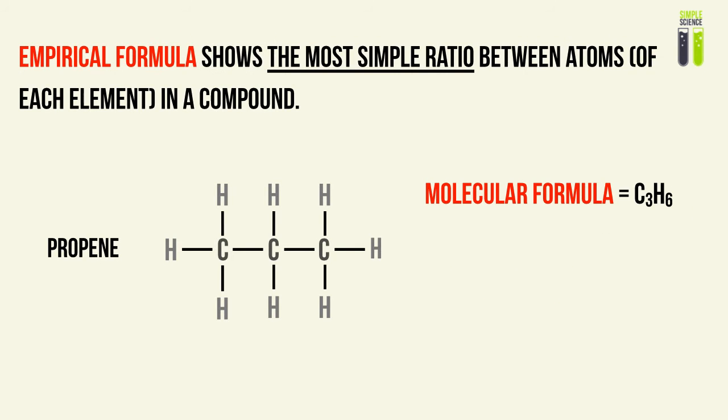The empirical formula, on the other hand, will show the simplest ratio between the atoms of an element in the compound. So basically, it's the molecular formula but simplified to the nearest whole number. So that C3H6 — you divide by three for all of the carbons and hydrogens, so you get CH2. It's a simple division to give a whole number ratio to represent our compound.